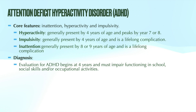The evaluation for ADHD begins at around four years when those symptoms start to manifest. These symptoms must impair functioning in school, social skills, and/or occupational activities in order to meet diagnostic criteria. A child with potentially ADHD must be evaluated and observed in various settings — including the home, the school, and social settings — because these symptoms are present in all settings, not only one.